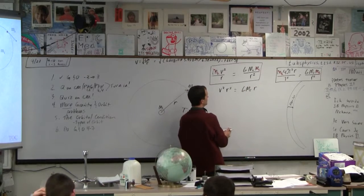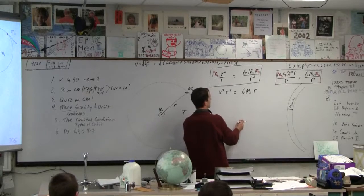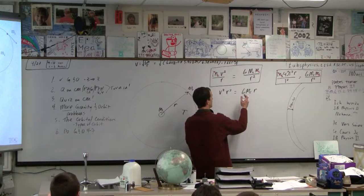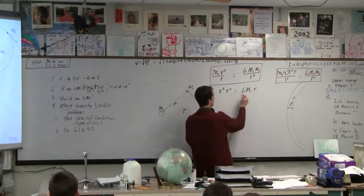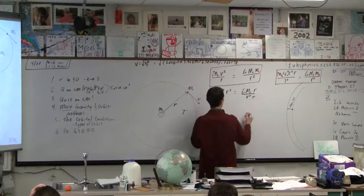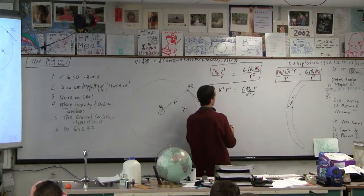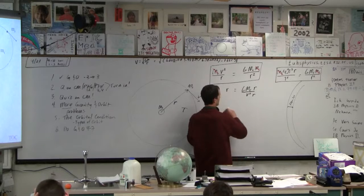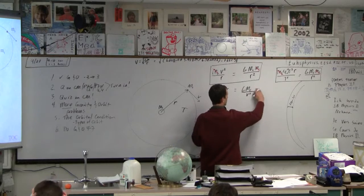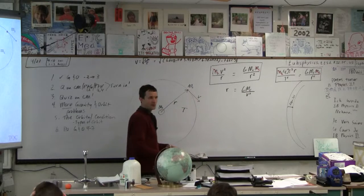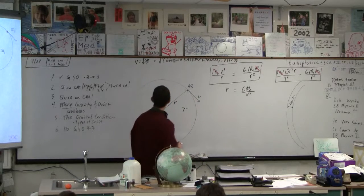And then to solve for R, what do we do? Divide by V squared. We've got to get R by itself. I guess we can divide by V squared and divide by R, can't we? And then we get R on this side and no R there. And then we don't need the square root. We raise it to the one power. Okay, so R is equal to GMc over V squared.